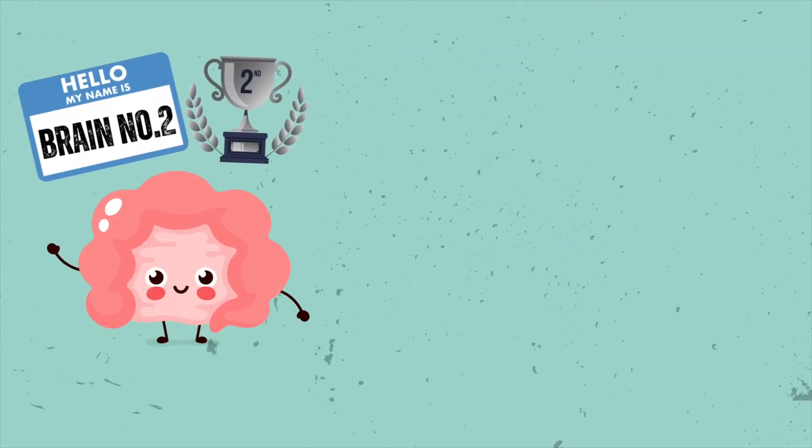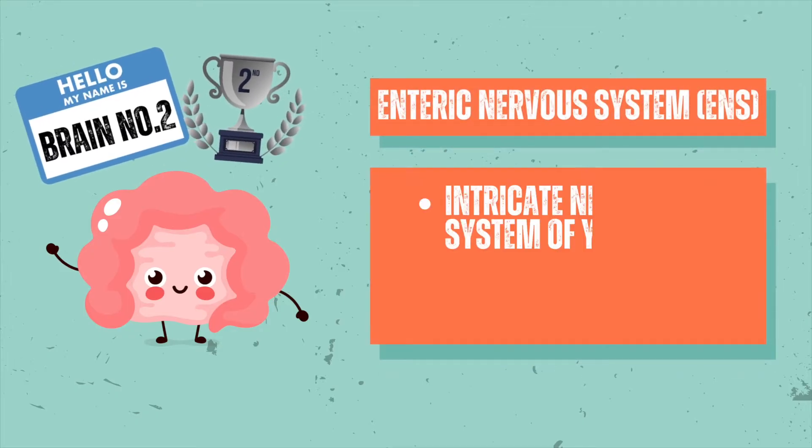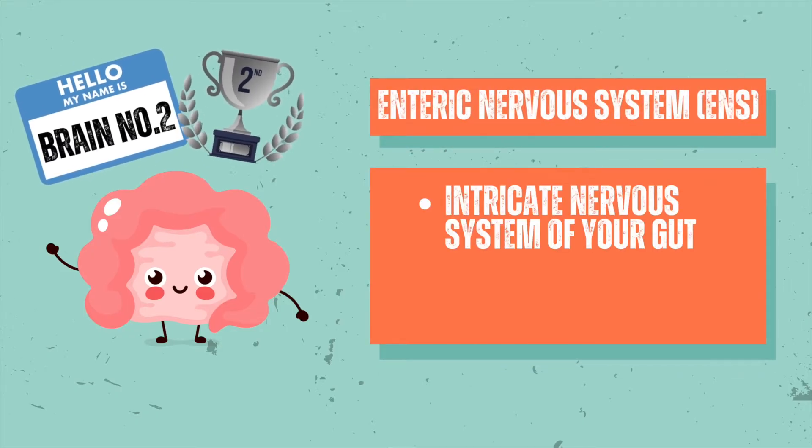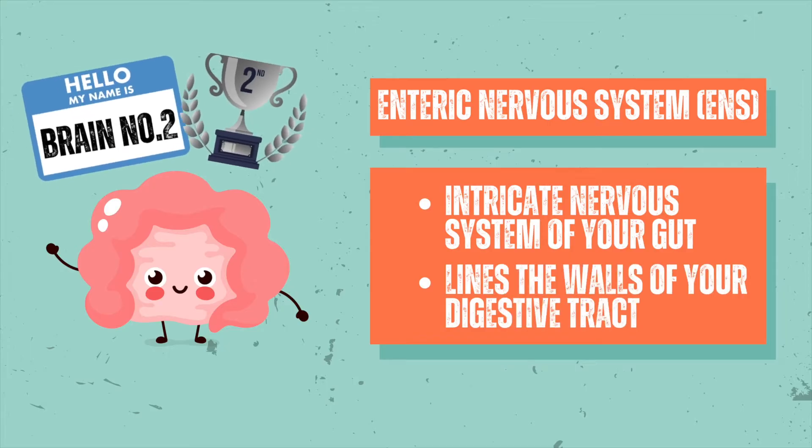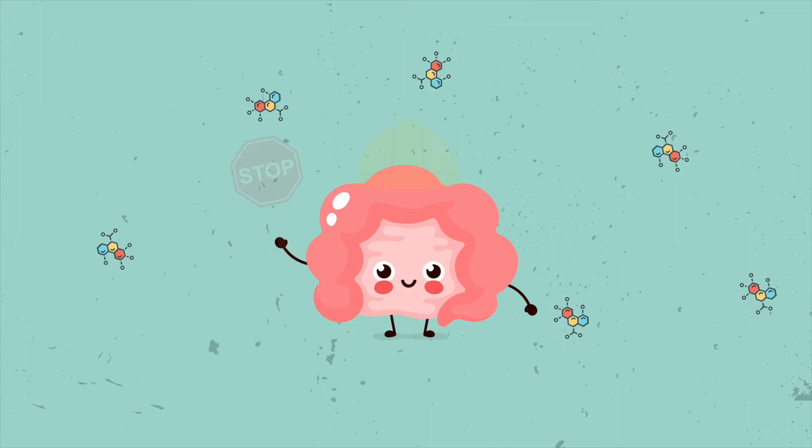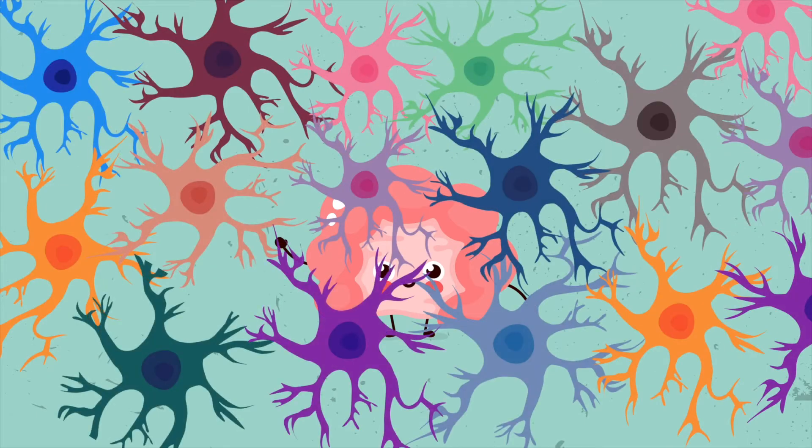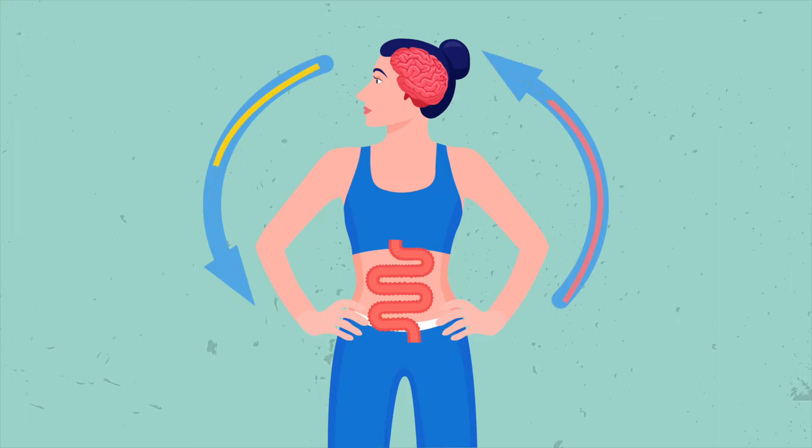Your gut is often referred to as your second brain. This is due to the enteric nervous system, or ENS, which is the intricate nervous system of your gut. It lines the walls of your digestive tract and does much more than just manage digestion by releasing enzymes and controlling blood flow. This complex network of neurons constantly communicates with your brain, creating a remarkable dialogue between your two brains.